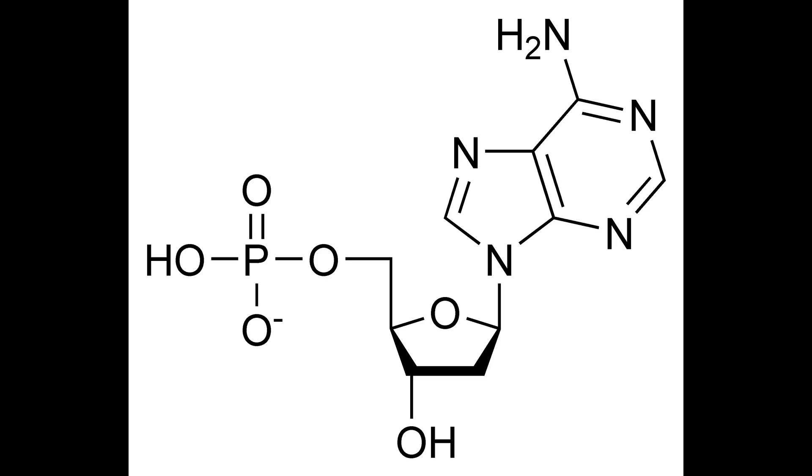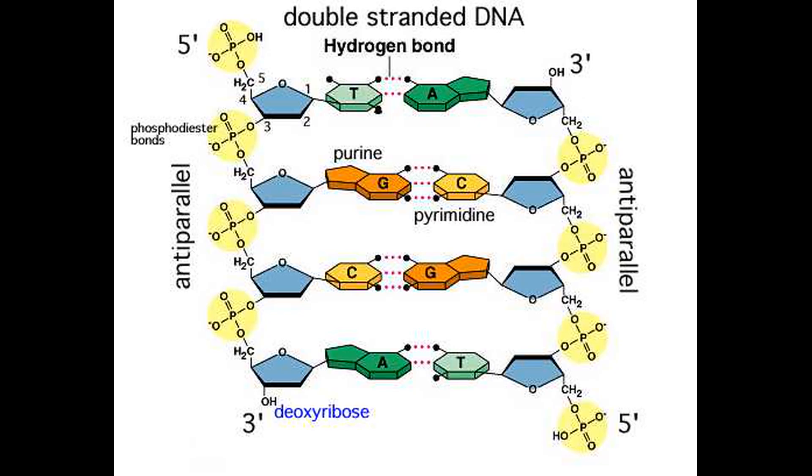Nucleotides are a type of monomer, an organic molecule that can link together in large quantities to produce chain-like molecules called polymers. When they do, the resulting polymer is referred to as a polynucleotide or a DNA strand.